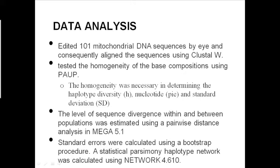For data analysis, researchers edited 101 mtDNA sequences by eye and aligned them using ClustalW. They tested homogeneity of base compositions using PAUP, which was necessary for determining haplotype diversity, nucleotide diversity, and standard deviation within subspecies. The level of sequence divergence within and between populations was estimated using pairwise distance analysis in MEGA 5.1, with standard errors calculated via bootstrap procedure. A statistical parsimony haplotype network was calculated using Network 4.610.